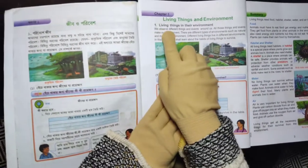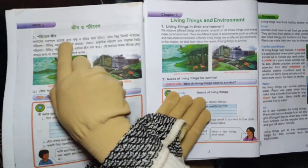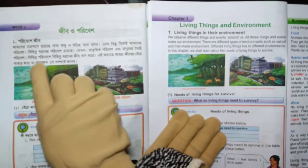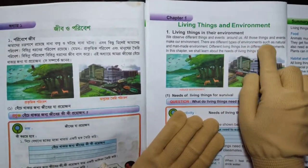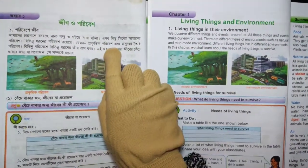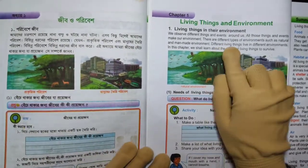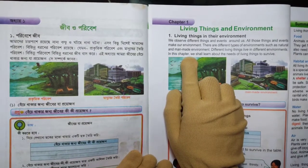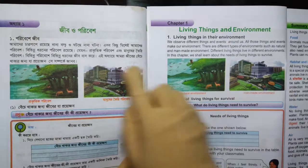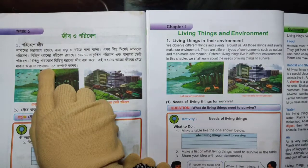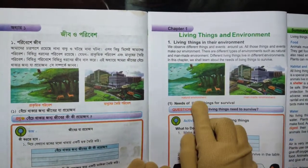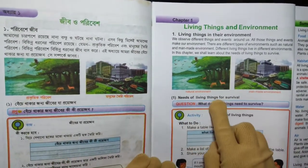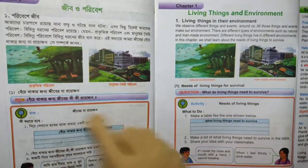Living things live in different environments. In this chapter we shall learn about the needs of living things to survive. We will cover the needs of living things for their survival — what living things need to survive.